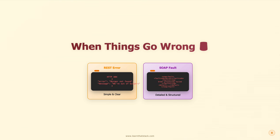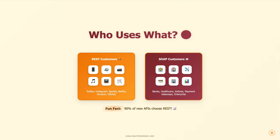And when something goes wrong, even the errors are different. REST just tells you straight up: '404 — Burger Not Found. We're out of burgers.' Simple, clear, done. SOAP sends you a formal fault notice with fault codes, fault strings, and detailed explanations wrapped in 17 layers of XML. It's like getting a legal document because they ran out of lobster. Both work — one's just a lot more dramatic about it.